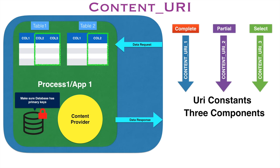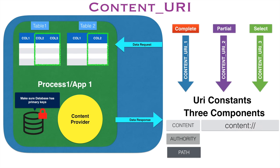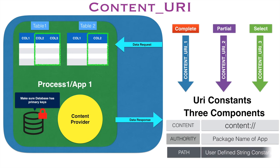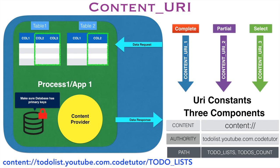A URI contains three components: Content, Authority, and Path. Content is the string 'content://' — nothing more than that. Authority is typically the package name of the app, and Path is a user-defined string constant. In reality, it looks like 'content://' followed by the package name of the application and then a slash with a user-defined string that uniquely identifies the particular dataset you want to expose through that Content URI.